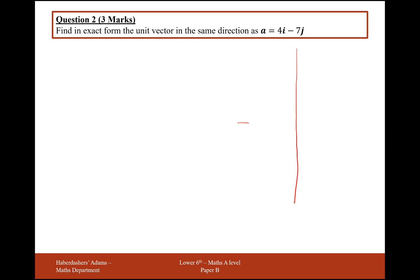So what we've got going on here is we have a vector going 4 to the right and 7 down — 4i minus 7j. But what we want to make is a unit vector that goes in the same direction. A unit vector is the same vector as our 4i minus 7j, it just has a length of 1.